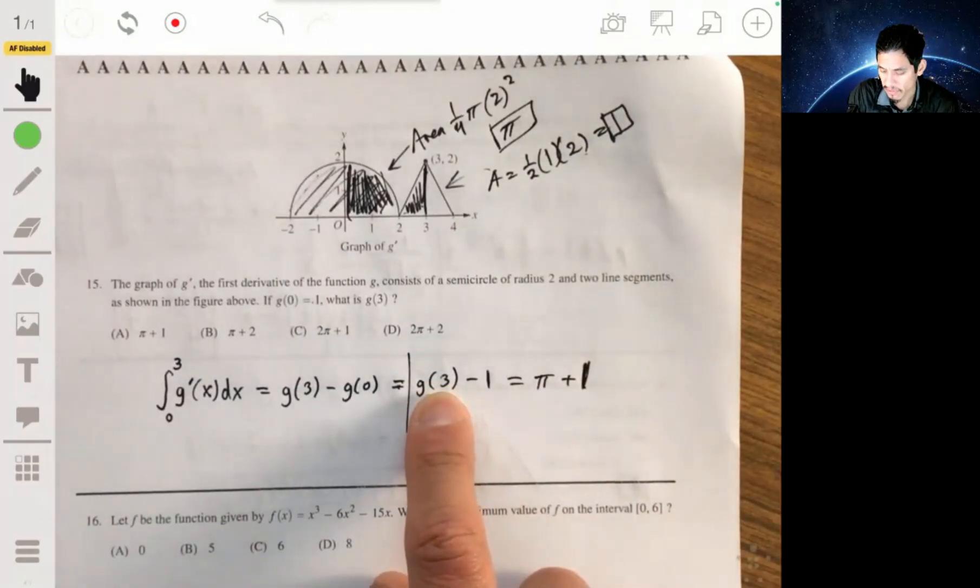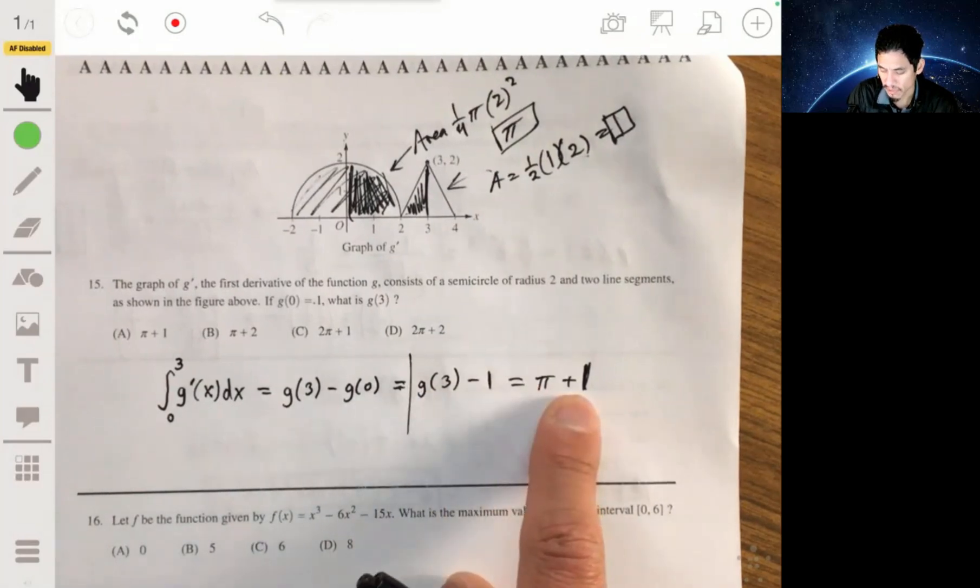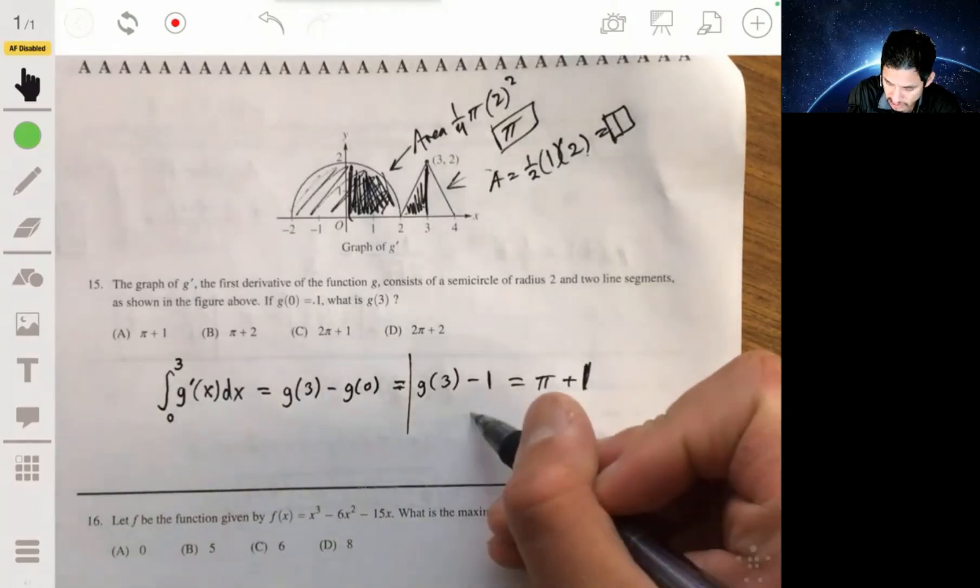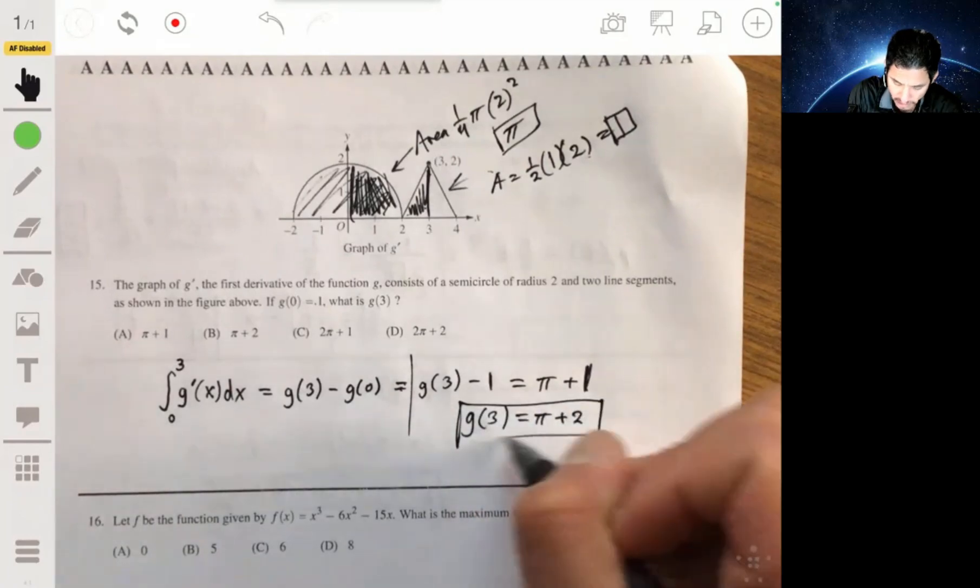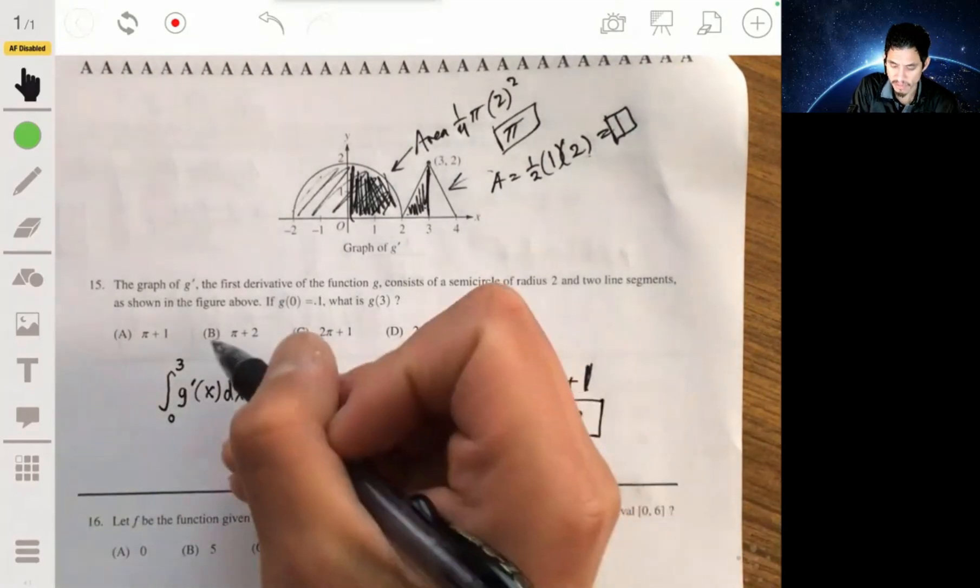So from here, you can solve for G of 3, because you have G of 3 minus 1 equals pi plus 1. Just add 1 to both sides, and you get G of 3 equals pi plus 2. And so the answer will be B.